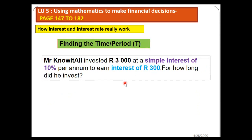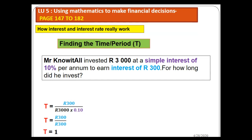If they want us to find T, the number of periods: Mr. Know It All invested 3000 at a simple interest rate of 10% per annum and earned interest of 300. For how long did he invest? The formula is: T = I ÷ (P × R). Substituting: 300 divided by 3000 times 0.10. The answer is one year. Always start with the formula — it is very important.